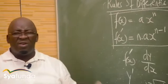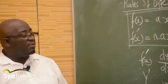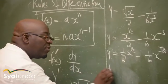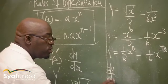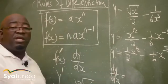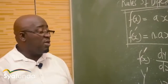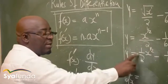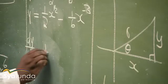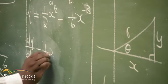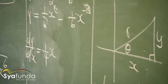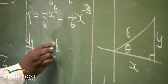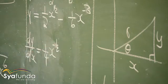Now we can differentiate. I indicate when I start differentiating by using the dy/dx notation. Take the exponent and multiply it by the coefficient. For the first term: (1/2) × (1/2) = 1/4, and the new exponent is 1/2 − 1 = −1/2.